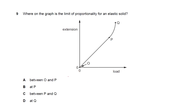Question 9: where on a force-extension graph is the limit of proportionality? People often mistake the range (0 to P) as the answer, but the limit of proportionality is the point P itself — not the range up to it. So the answer is B. Remember: the limit is a specific point, not a range.